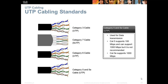As we move to faster data transmissions, we get into category 6, which has a divider separating all four pairs inside the cable, making it slightly thicker and bulkier but capable of greater speeds. Category 7 is also available. In this class, we will mainly talk about category 5e and category 6.